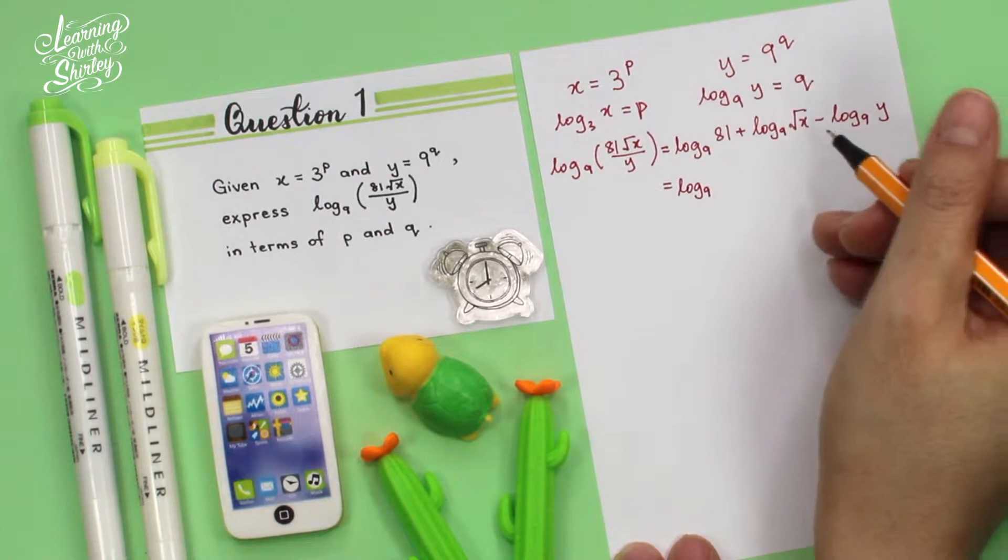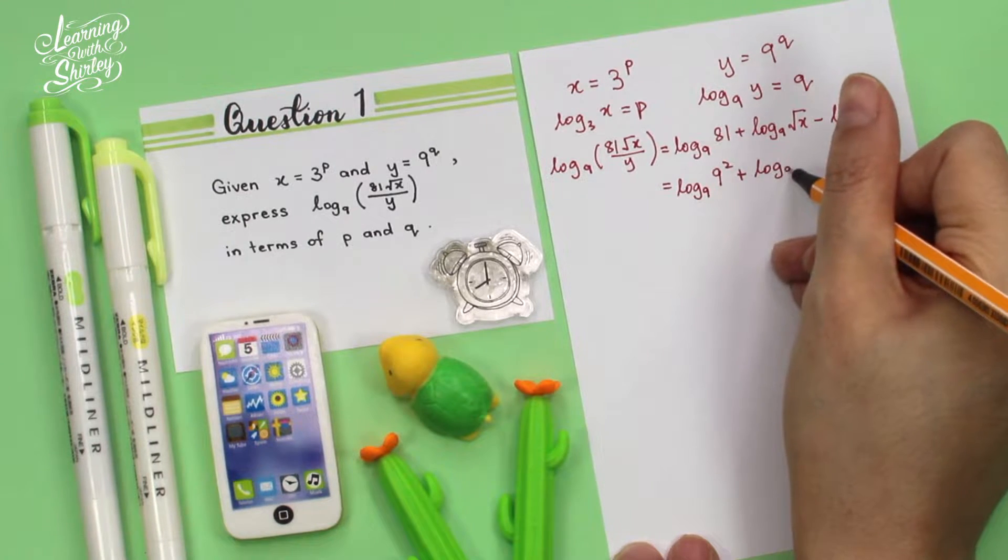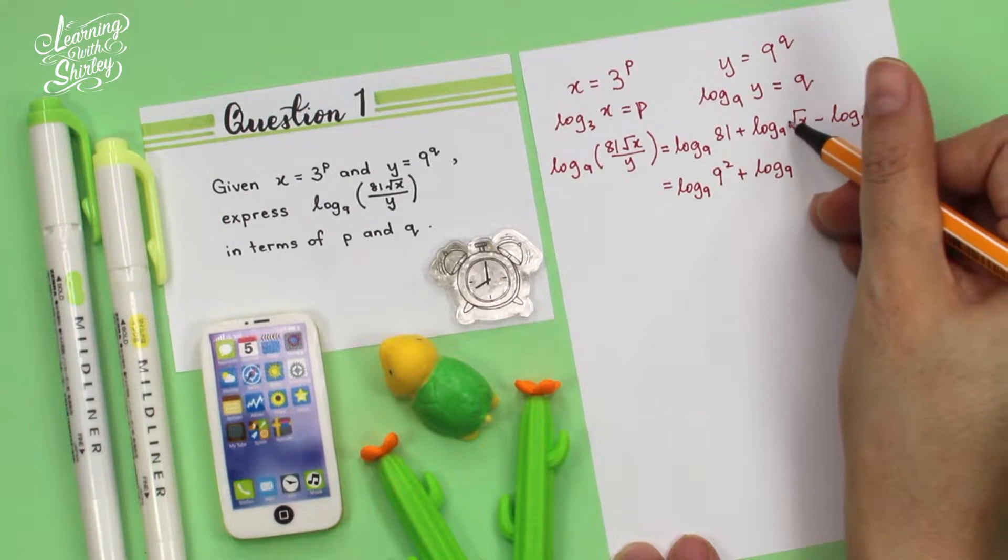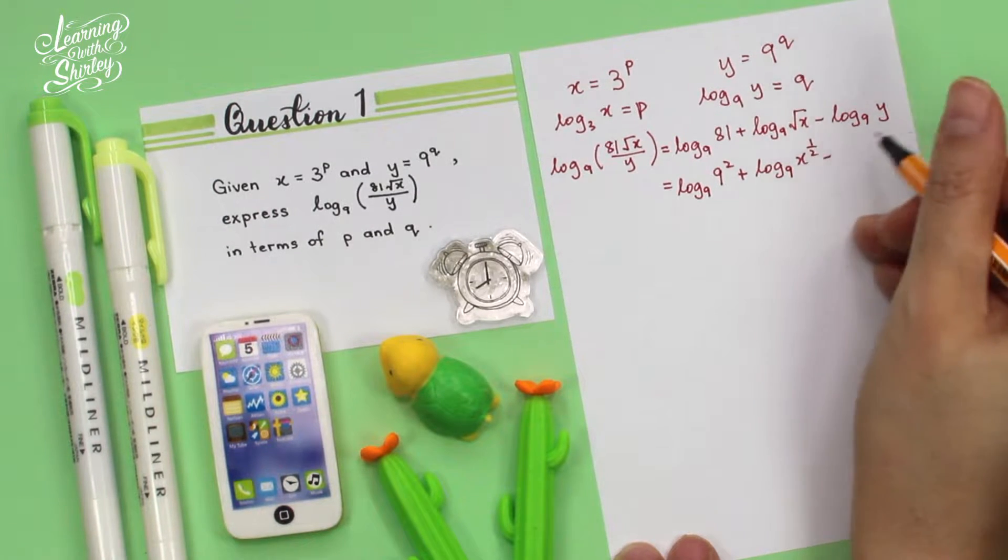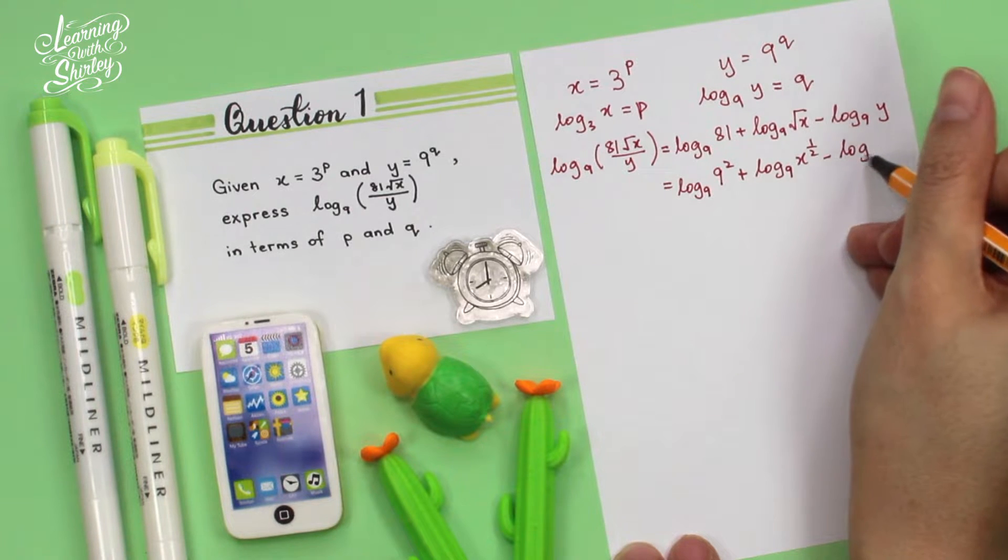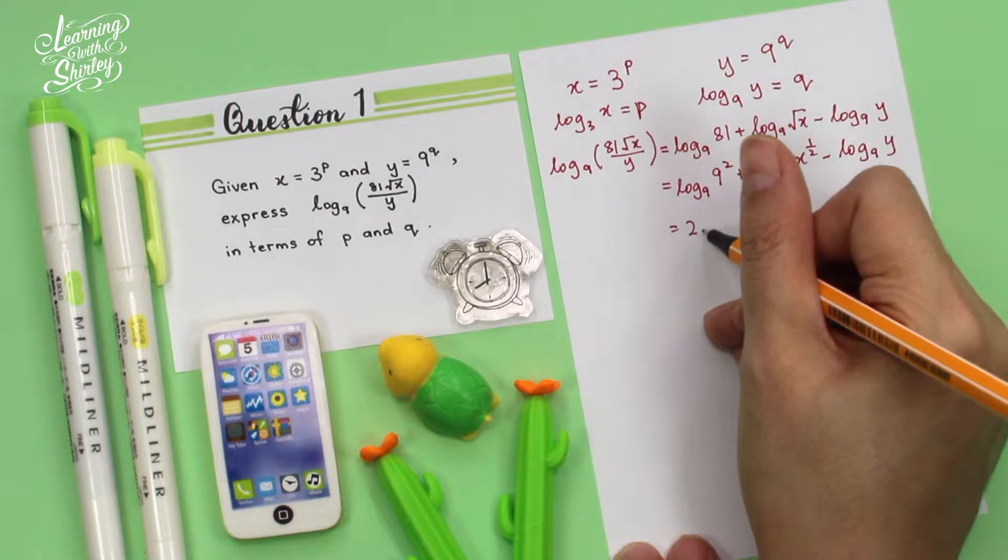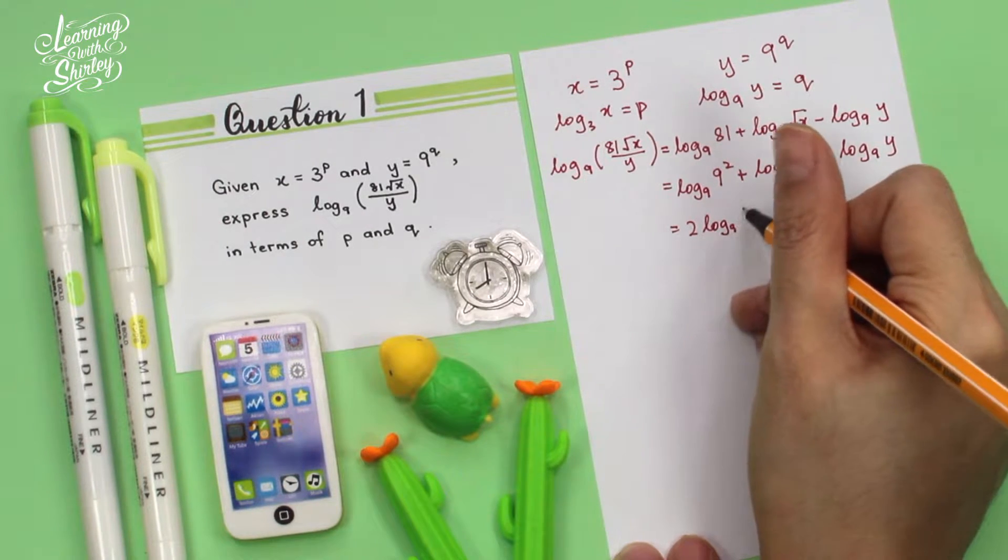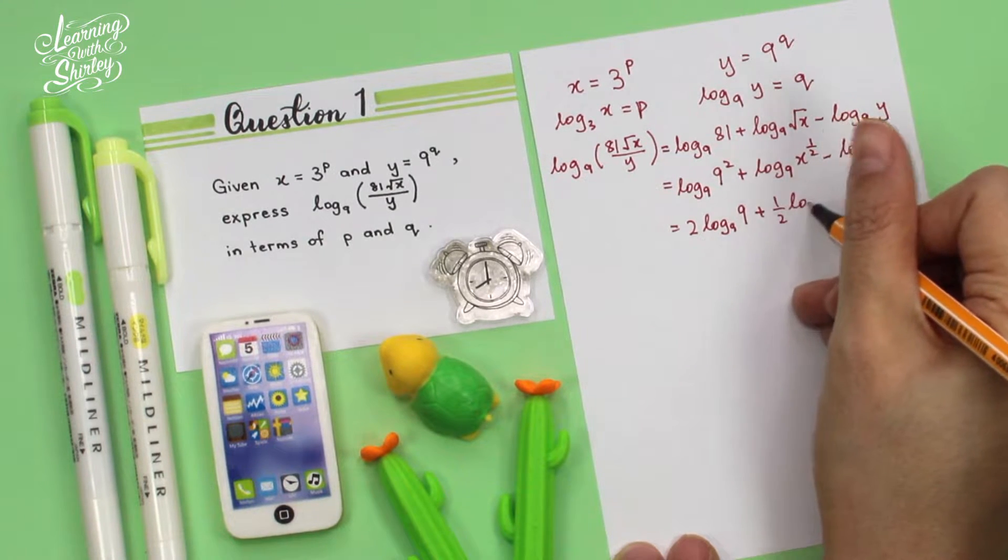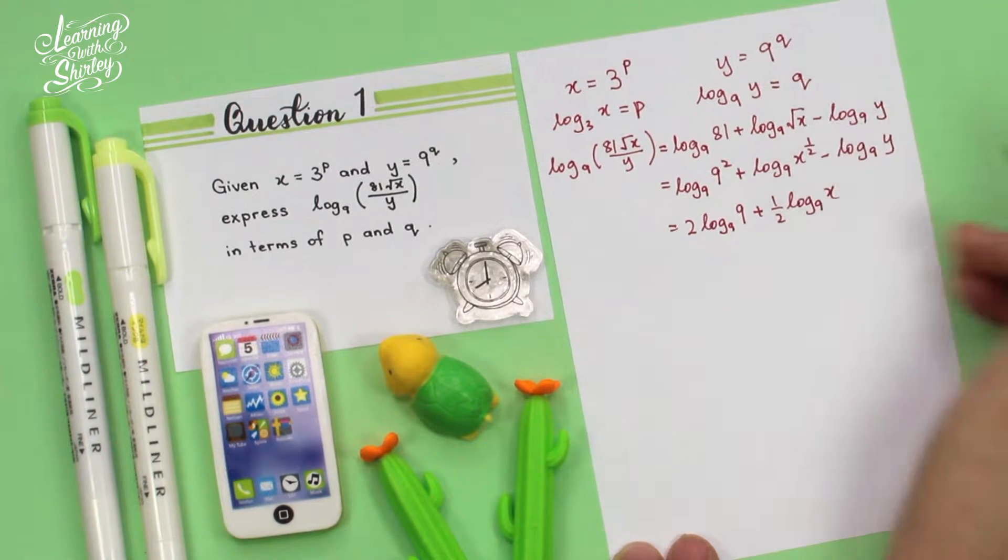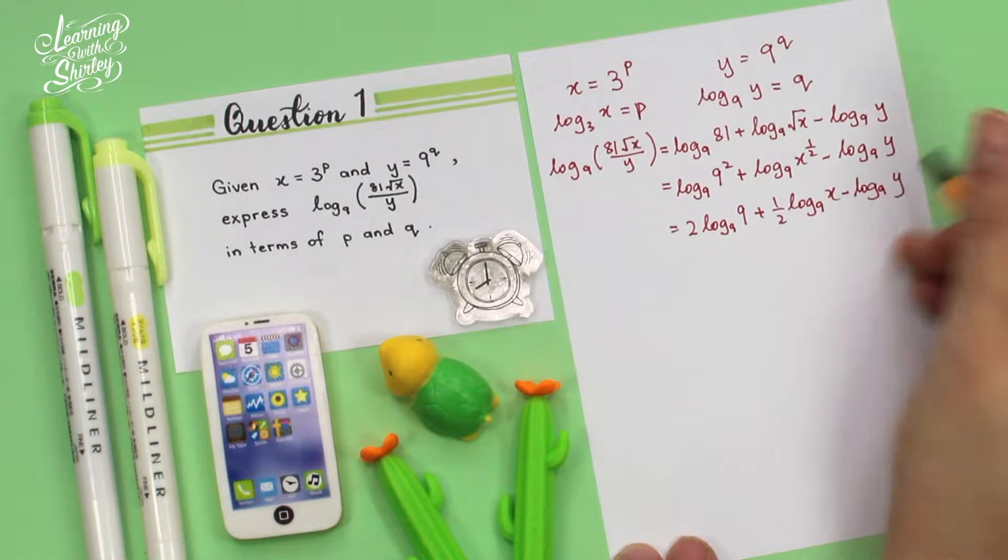So log 81 plus log √x minus log y. So equals log 9² plus log x^(1/2) minus log y, since 81 is 9 squared and square root of x is x to the power of half. And then we bring down the powers.